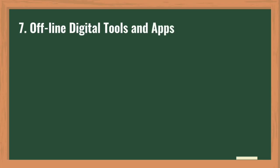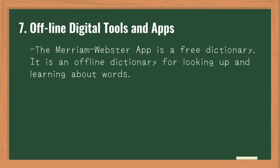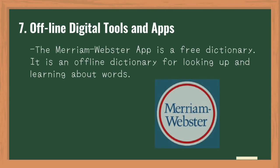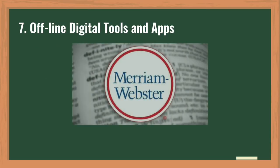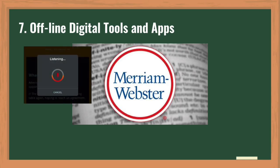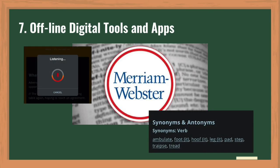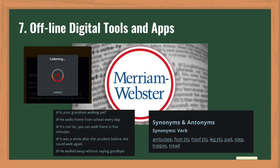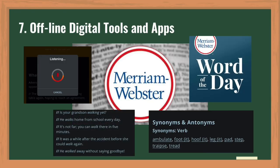Next are offline digital tools and apps. One example is the Merriam-Webster app, a free dictionary for looking up and learning about words. The app offers voice search, synonyms, antonyms, example sentences, word of the day, and more — even with no internet connection.